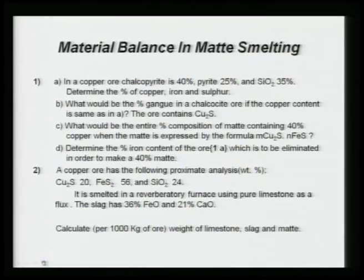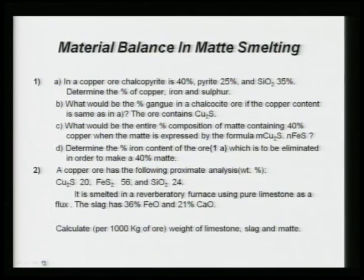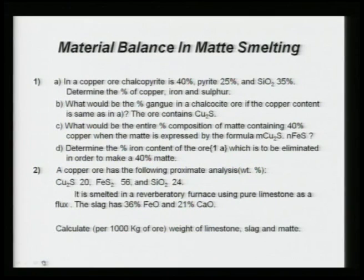Problem number 2 says a copper ore has the following proximate analysis — proximate analysis represents the analysis of minerals. It has Cu₂S, FeS₂, and SiO₂. It is smelted in a reverberatory furnace using pure limestone as a flux. The slag has 36 percent FeO and 21 percent CaO. Calculate per 1000 kg of ore the weight of limestone, slag, and matte.